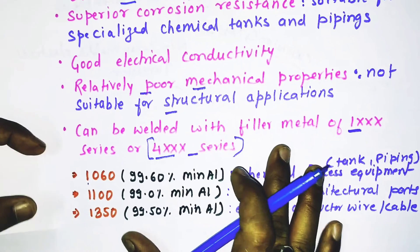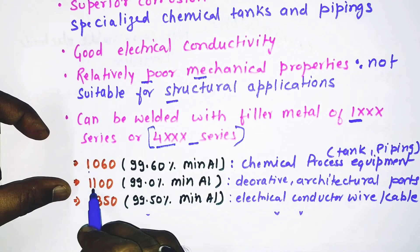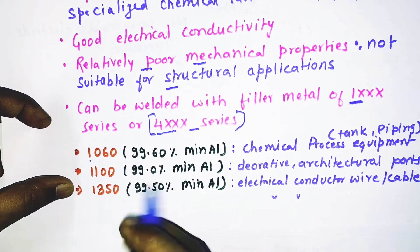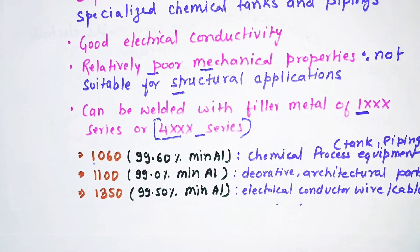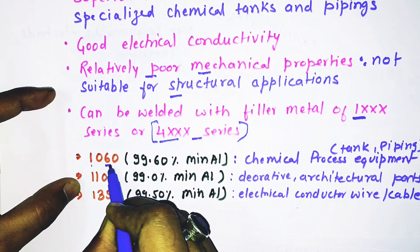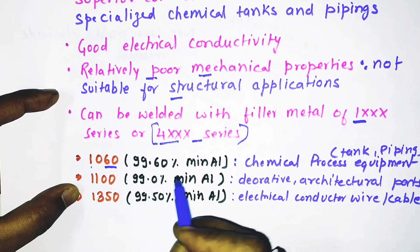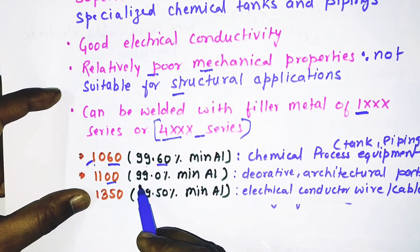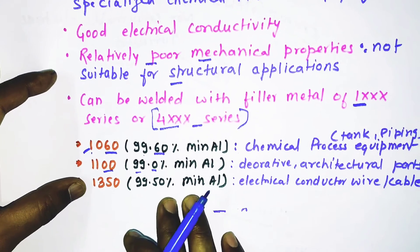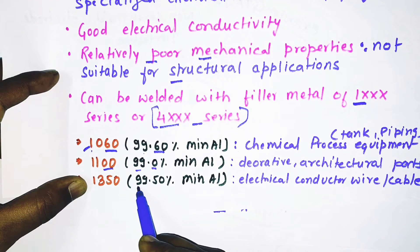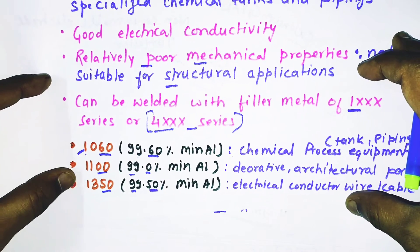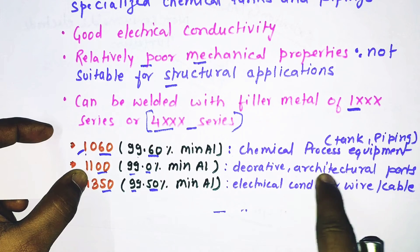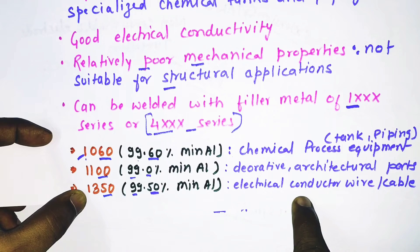The main alloys in the 1xxx series are 1060, 1100, and 1350. The last two digits indicate the minimum aluminum content: 1060 means minimum 99.60% aluminum, 1100 means minimum 99.00% aluminum, and 1350 means minimum 99.50% aluminum. Applications: 1060 is used in chemical process equipment like tanks and piping; 1100 is used in decorative and architectural parts; 1350 is used in electrical conductor wire and cable due to its very good electrical conductivity.